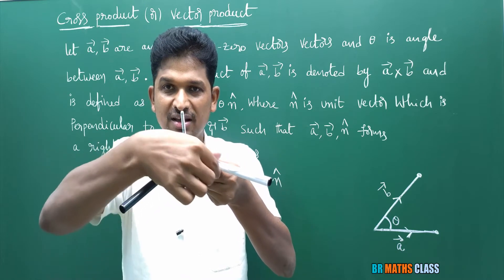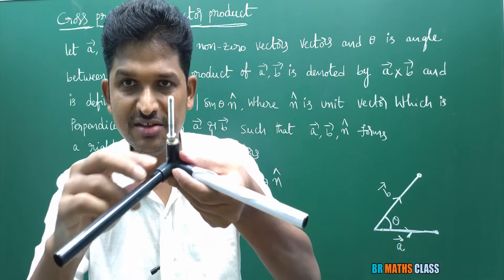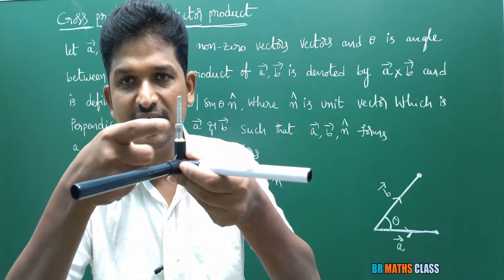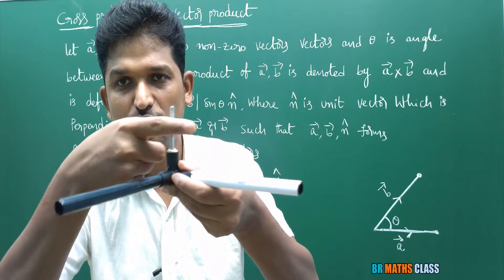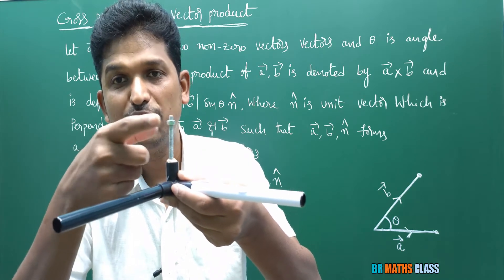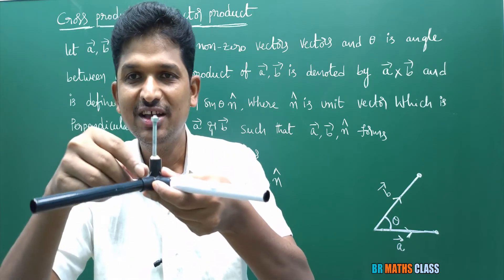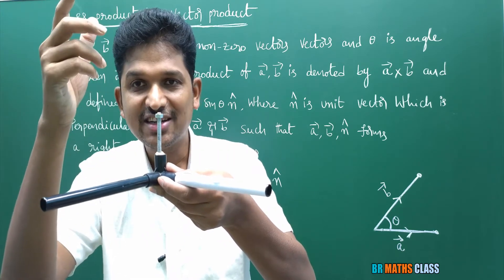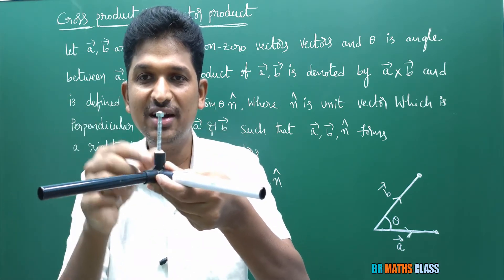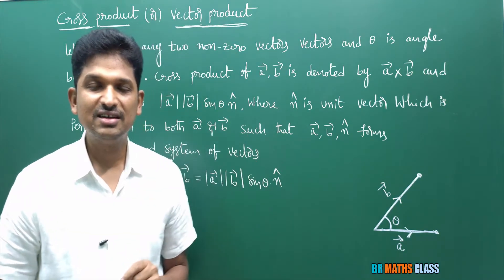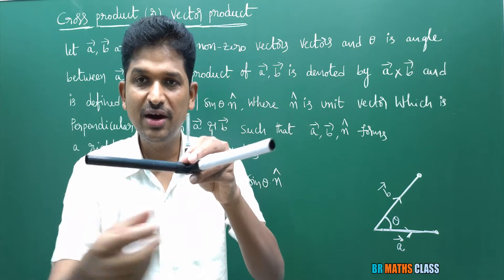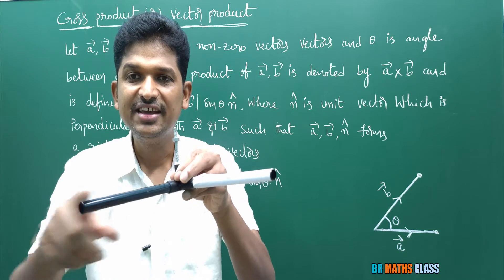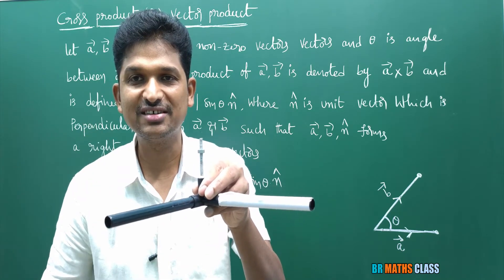What does it mean that a̅, b̅, n̂ forms a right-hand system of vectors? I placed a screw at the point where a̅ and b̅ meet. If I rotate this screw in the sense of a̅ to b̅, observe what happens — the screw is moving upward direction. So when the screw moves upward, we say that a̅, b̅, n̂ forms a right-hand system of vectors. That is the direction of n̂.